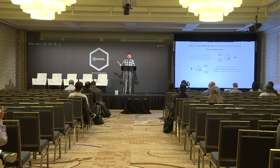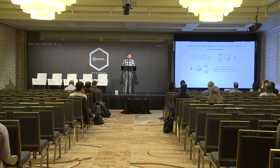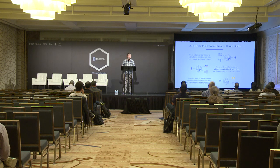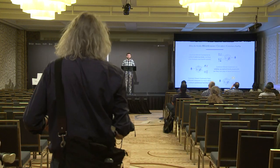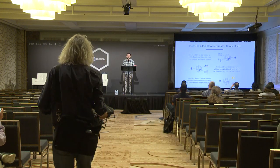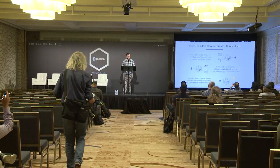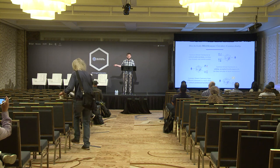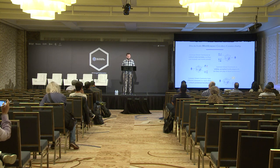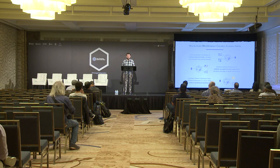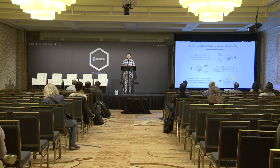Blockchain middleware like Chainlink provides access to critical external data, allows smart contracts to affect other systems off-chain — whether internal systems or third-party payment systems — and can enable contracts on one chain like Ethereum to talk to contracts on other chains like Hyperledger. Basically, the goal of blockchain middleware is to be the glue that allows us to create fair and useful smart contracts.